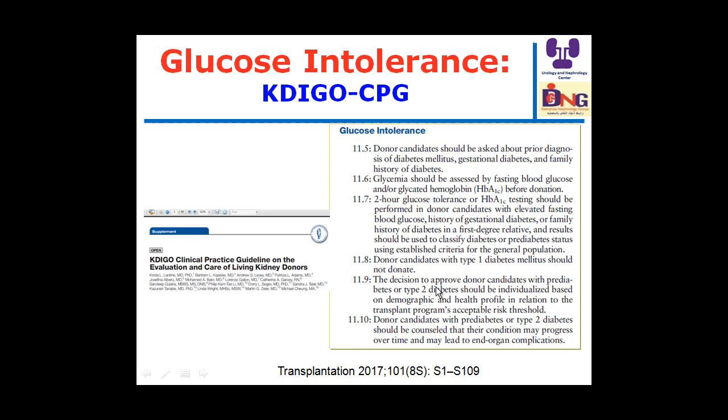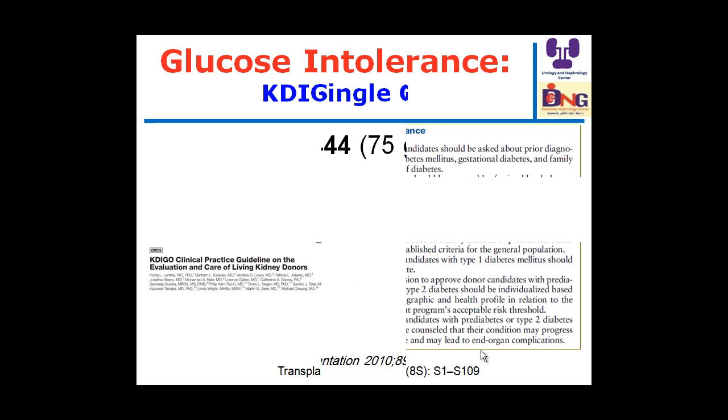Donor candidates with type 1 diabetes should not donate. The decision to approve candidates with pre-diabetes or type 2 diabetes should be individualized based on demographic and health profile in relation to the transplant program's acceptable risk threshold. Such donors should be counseled that their condition may progress over time and may lead to end-organ complications. However, our practice remains to avoid donors with diabetes or impaired glucose tolerance.